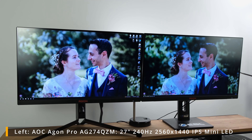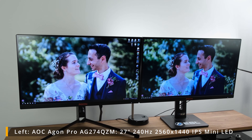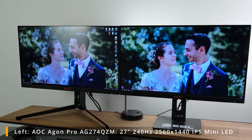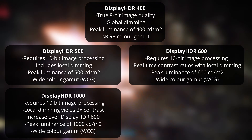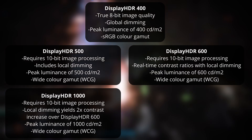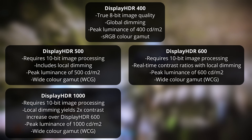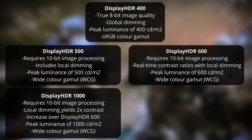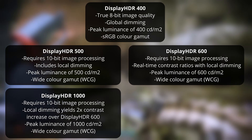If you have the budget and want to go further, there's the Display HDR 1000 certification, present on the AOC Agon Pro AG274QZM. This delivers a peak luminance of 1000 nits or above, local dimming with a 2x contrast ratio increase over Display HDR 600, a massive visible increase in the color gamut over Display HDR 400, and still requires 10-bit image processing.